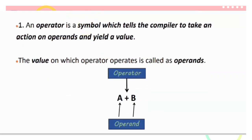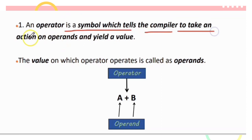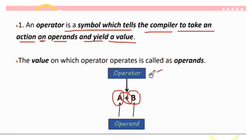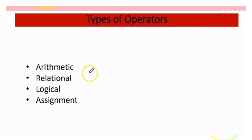An operator is a symbol which tells the compiler to take an action on operands and yield a value. The values on which an operator operates are called operands. Types of operators include: arithmetic, relational, logical, and assignment.